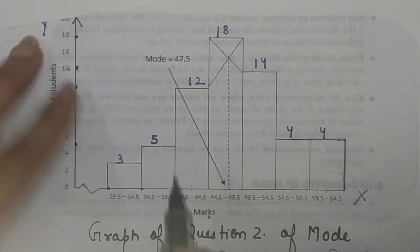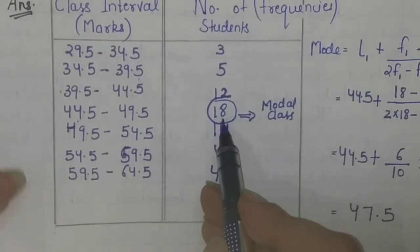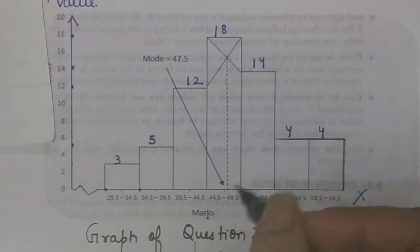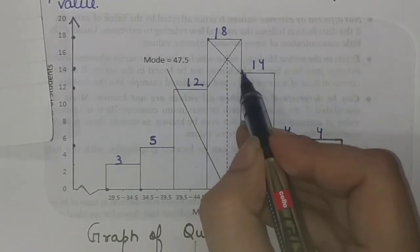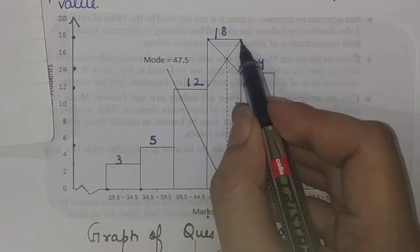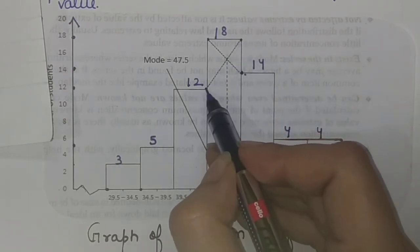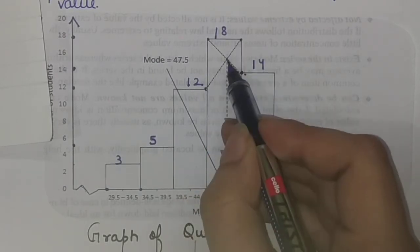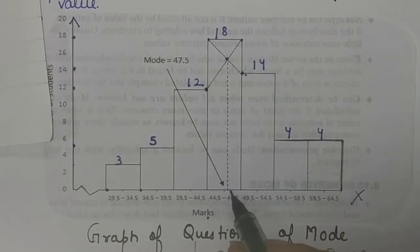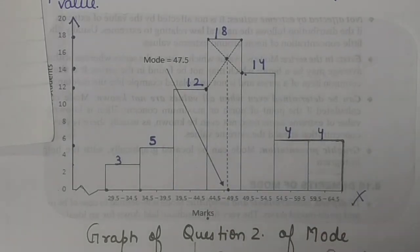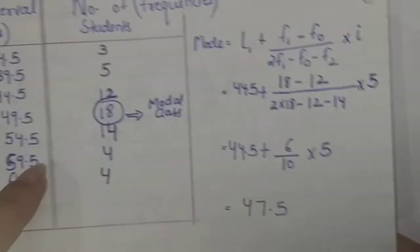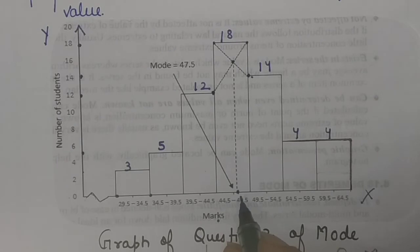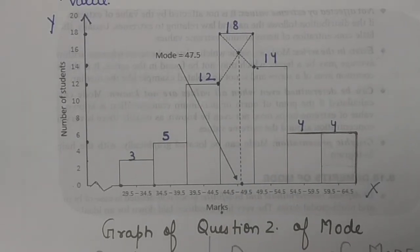Since I know the modal class is the one with frequency 18, that is my modal bar. Inside this modal bar I draw two diagonal lines — one from the upper-right corner to the adjacent bar's upper corner on the right, and one from the upper-left corner to the adjacent bar's upper corner on the left. I have calculated the mode as 47.5, and this is visible in the graph. If the graph is made properly, it should be exactly visible.